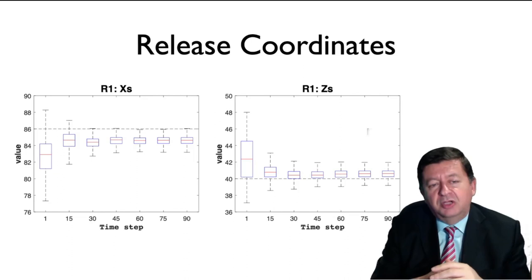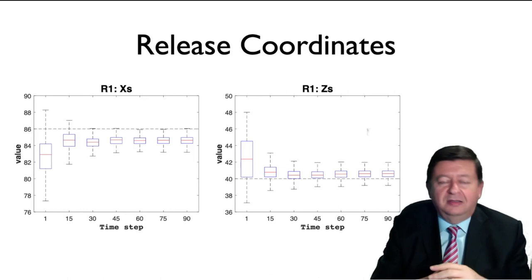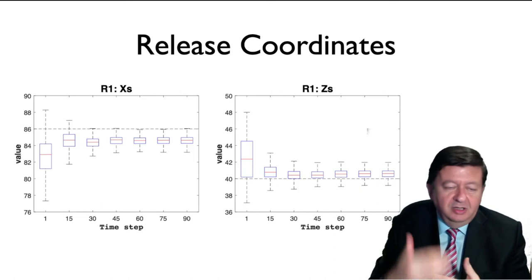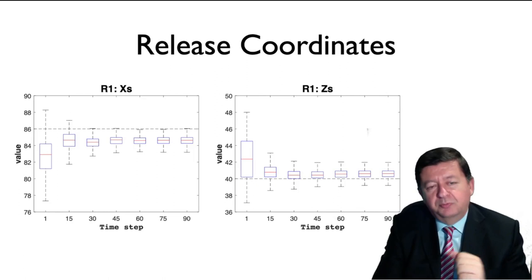We can see that both for the X and the Z value, we are getting almost exactly back the position where the injection happened. The same was done for the initial time, the final time, and the release amount, obtaining good values after some time steps of updating the model every 30 seconds.